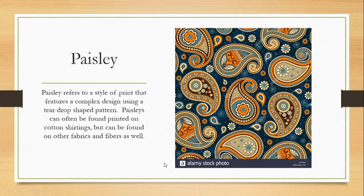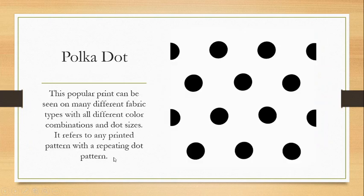Next we have paisley, which refers to a style of print featuring a complex design typically using a teardrop pattern shape — sometimes curled — and ornately patterned. They can be multicolored or just two colors, and can be found on many cotton fabrics and other fibers as well. Polka dot is another popular print seen on many different fabric types, referring to any printed pattern with a repeating dot pattern.